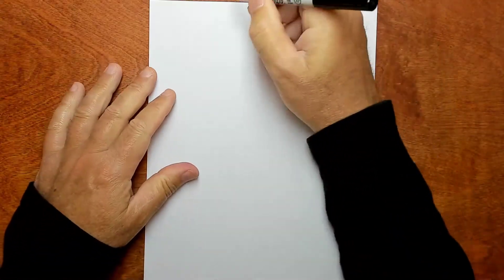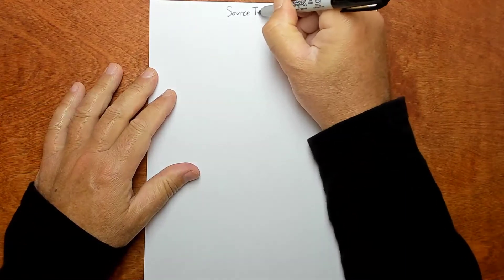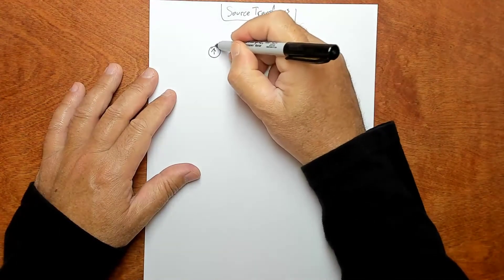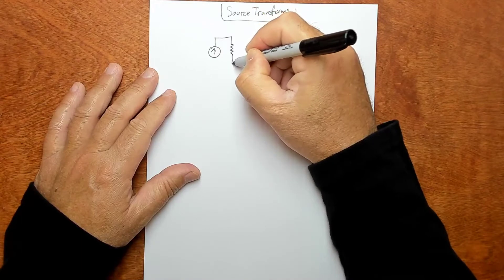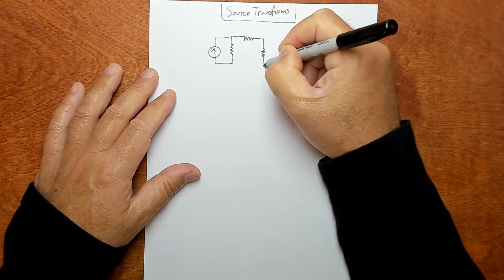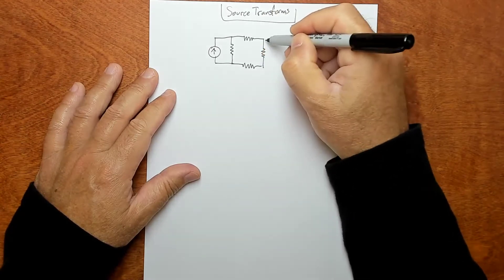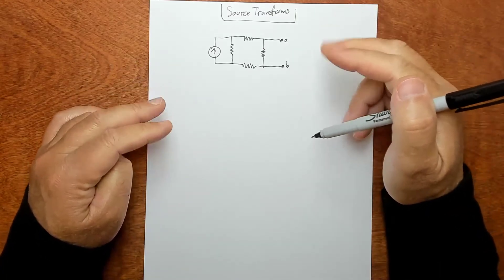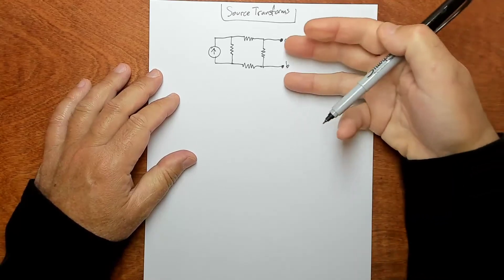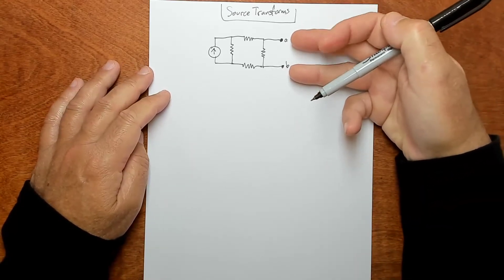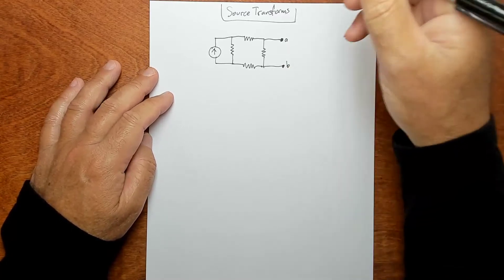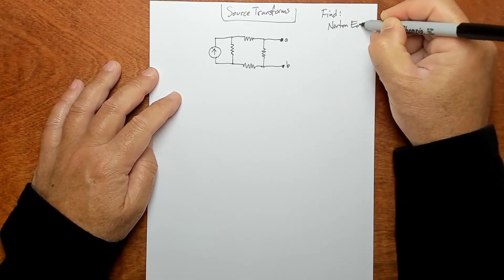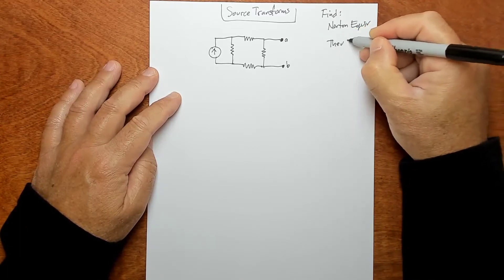Welcome back. Let's do a bunch of source transforms. We're given this little circuit right here with two terminals hanging off, A and B. So the A and B terminals are the terminals of interest — we're going to observe the behavior of the circuit at these two terminals, and we want to find the Norton equivalent. And let's go ahead and find the Thevenin equivalent while we're at it.